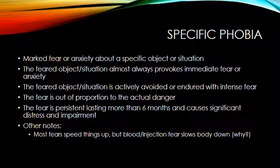The next anxiety disorder is specific phobia — when an individual has a marked fear about a specific object or situation. Common examples include fear of spiders, bees, elevators, or heights. The list could be endless. What distinguishes a specific phobia from a regular fear is that the fear must be immediate when the object is present, the situation is actively avoided, and the fear is out of proportion to the actual danger.